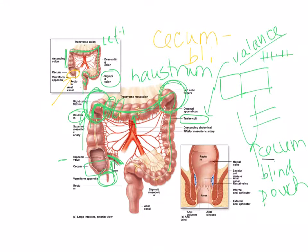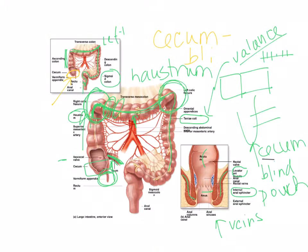Looking at the anatomy of the anus: the rectum comes in, the levator ani muscle is present, and in the anal canal there are veins. There are two sphincters — the internal anal sphincter, which is involuntary, and the external anal sphincter, which is voluntary. This works similarly to the urethra and urination.